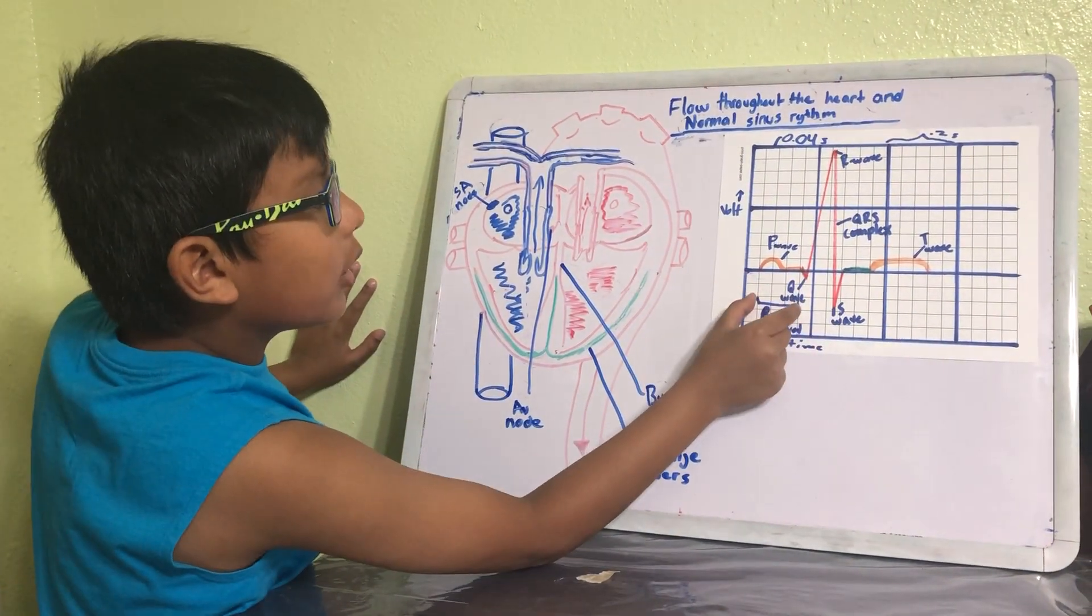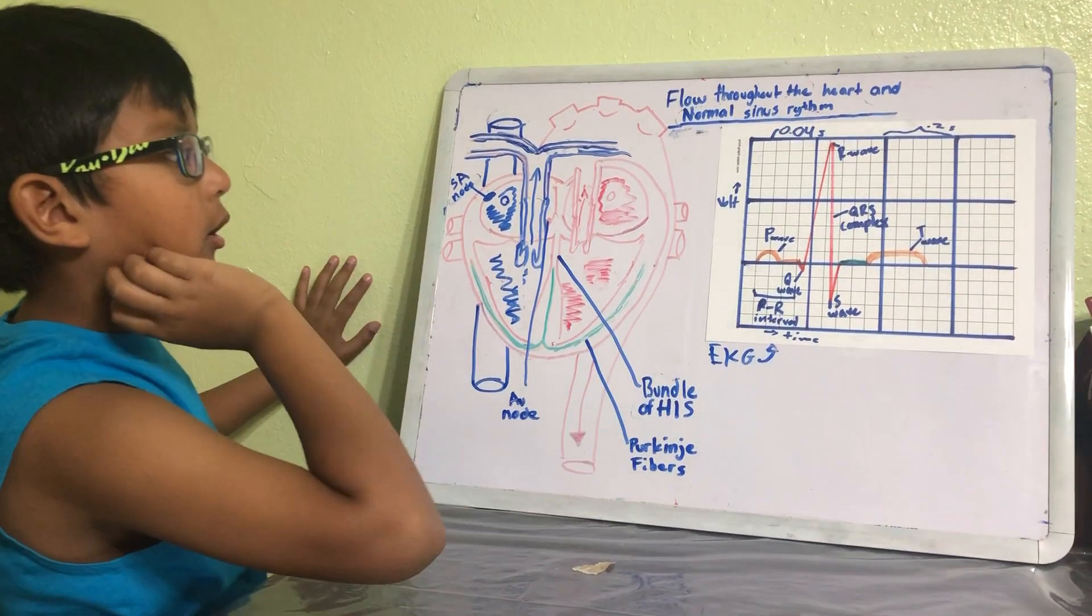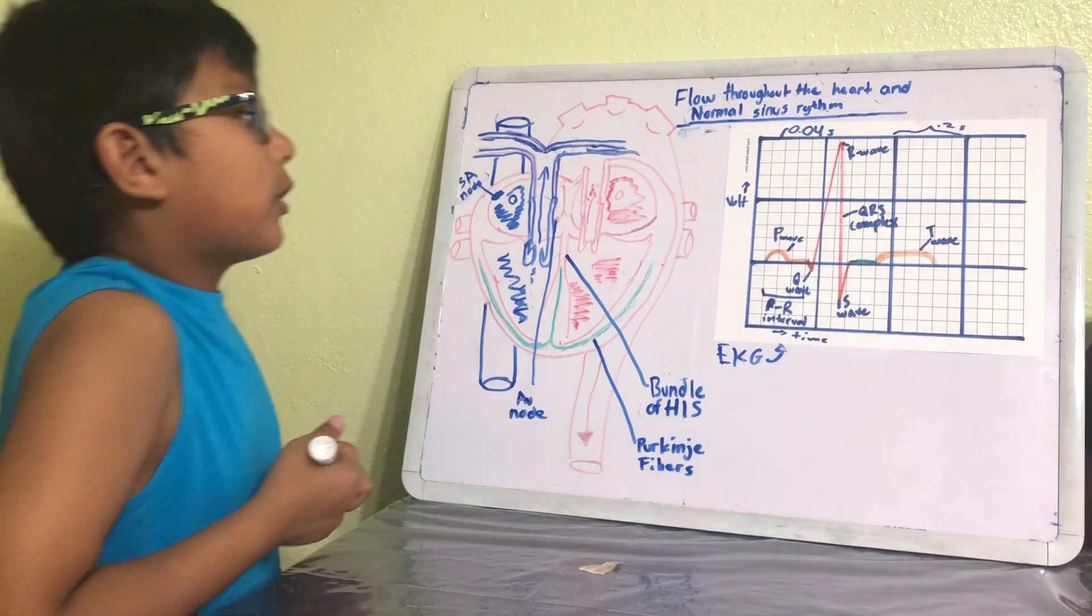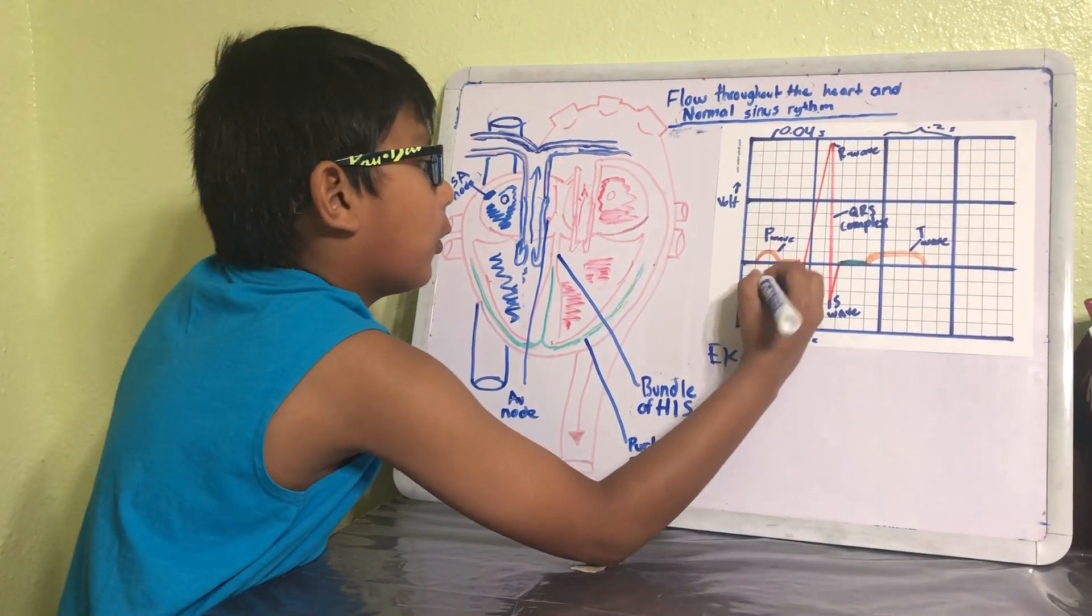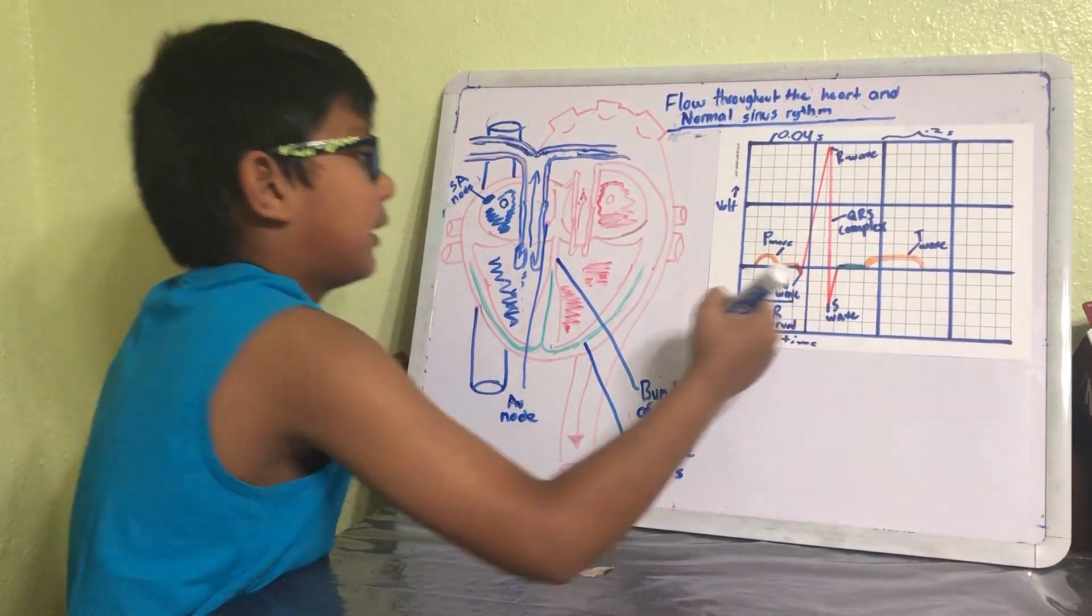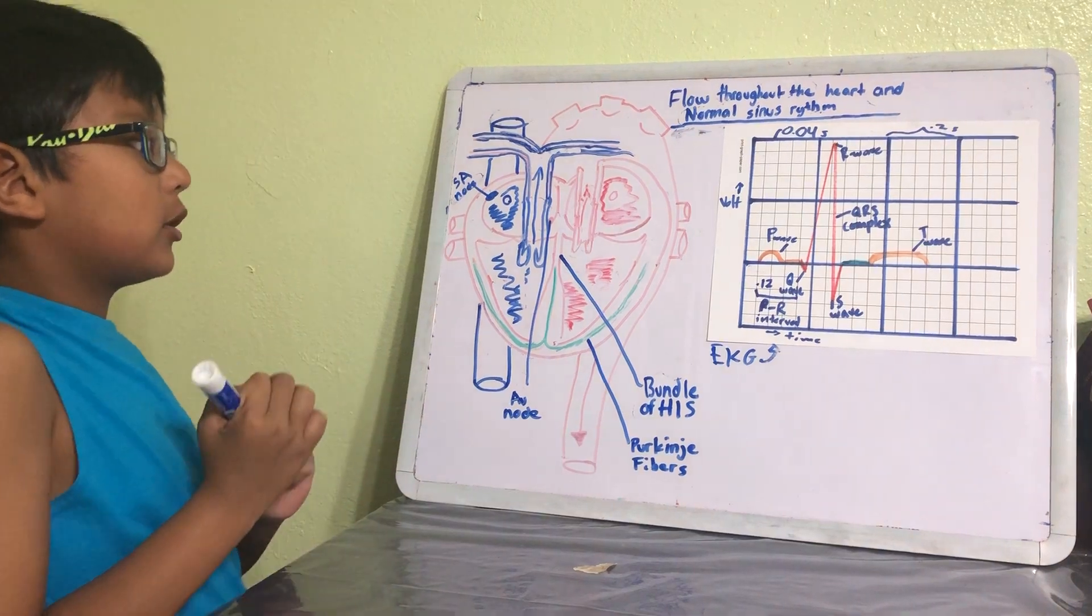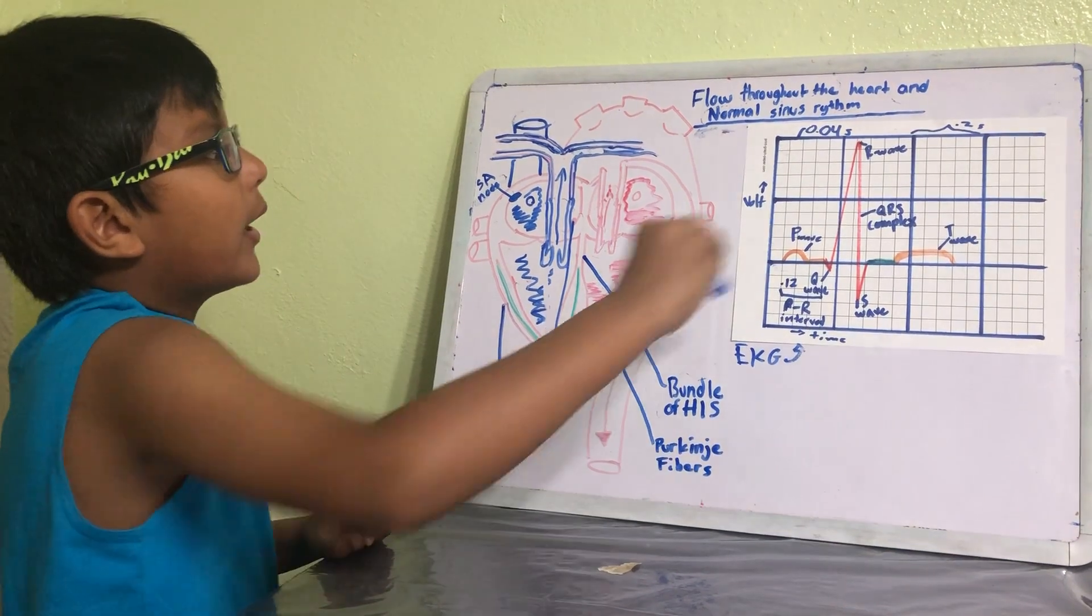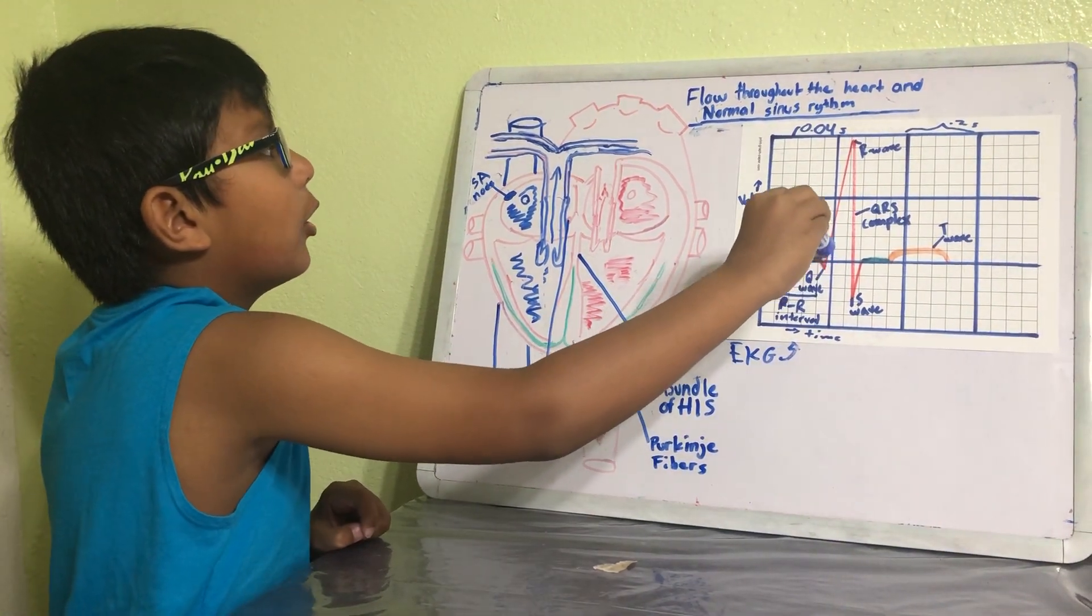That's why we call it the PR interval, and so this should last for 0.12 seconds. If it lasts for 0.2 seconds or more, there's a problem. So then we have a very high slope here to get to this, which is called the R wave.